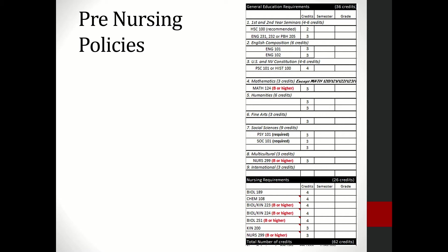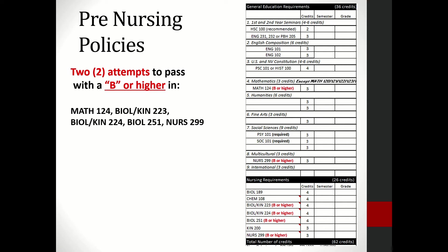Acceptance into the full program is competitive and has a two-attempt rule on specific courses where a grade of B or higher is required. A grade of B minus or lower is not acceptable for these courses: College Algebra, Anatomy and Physiology I and II, Microbiology, and Nursing 299.